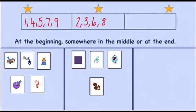Did you write two, three, six, and eight? Well done. They're all in the middle box because you can hear the qu in the middle of the words.